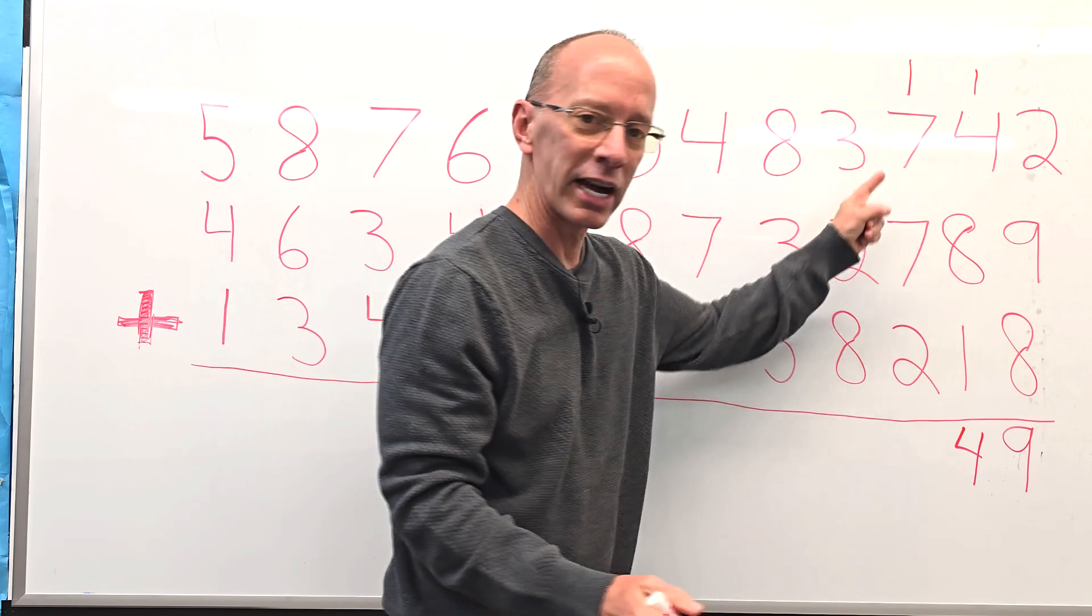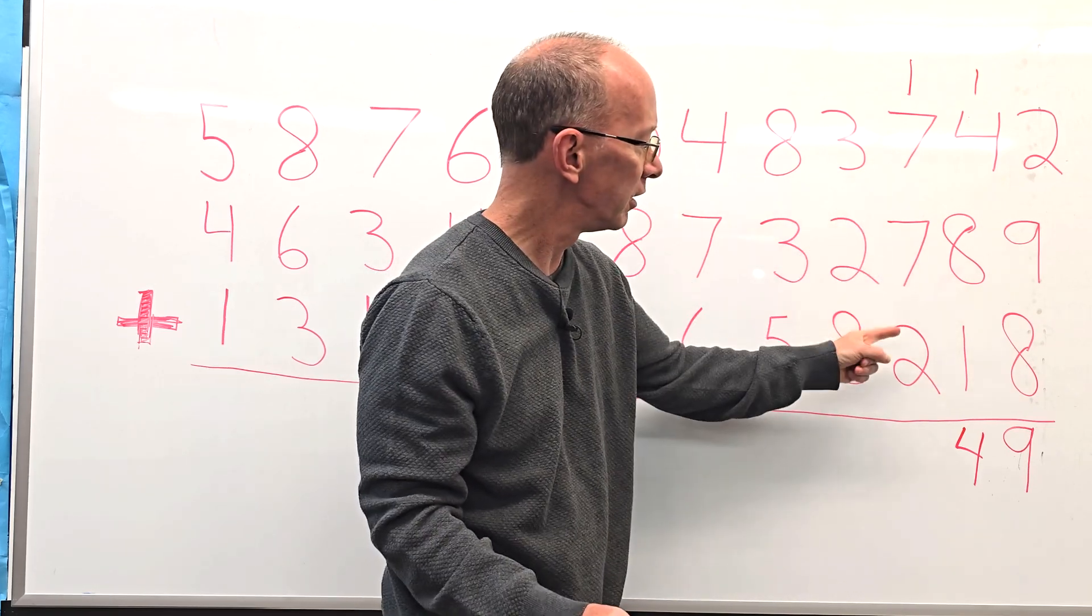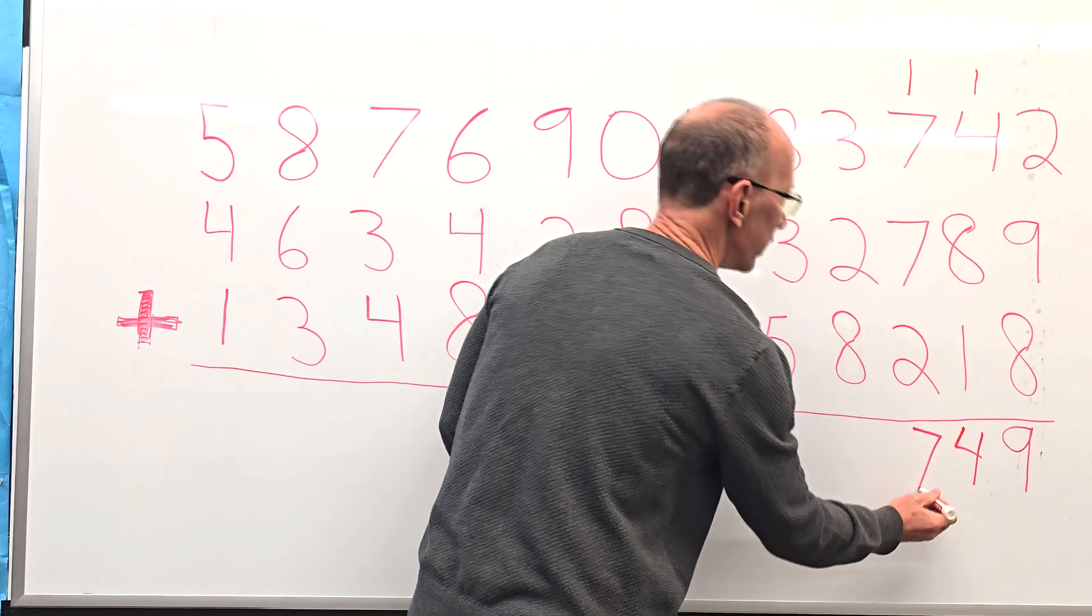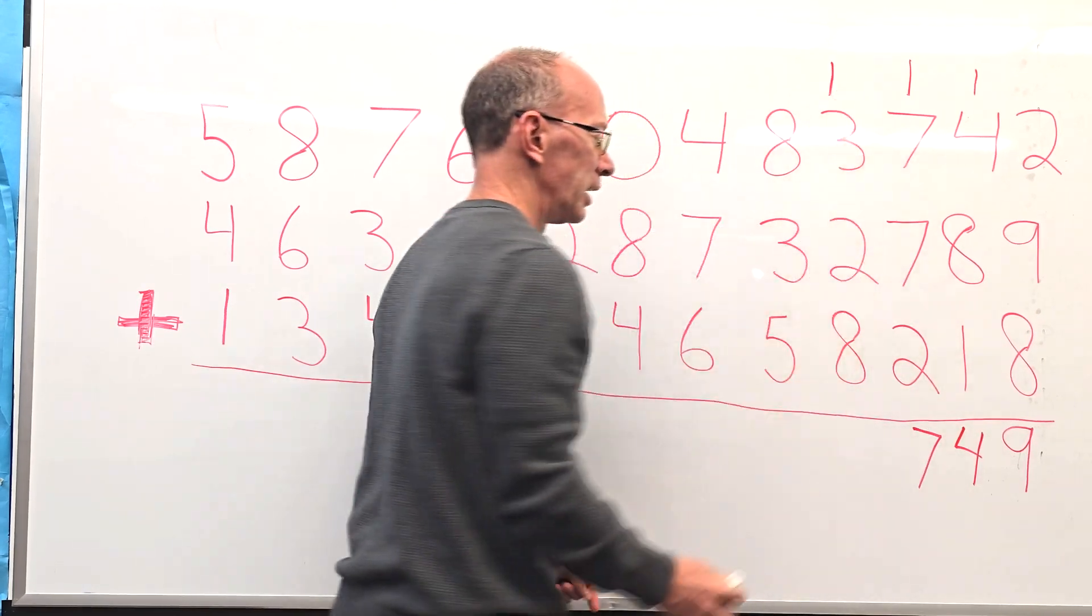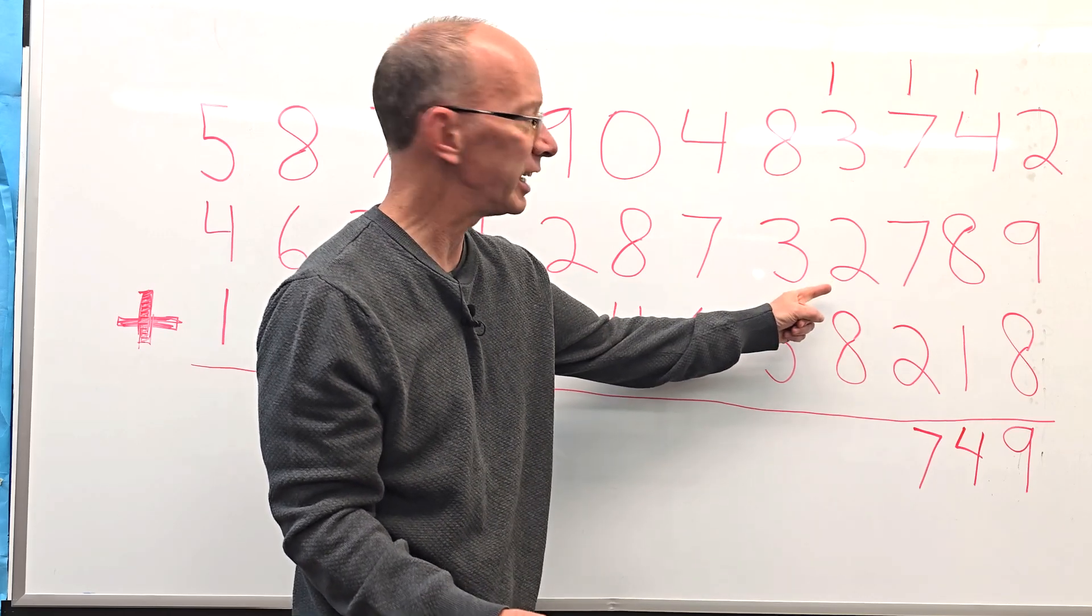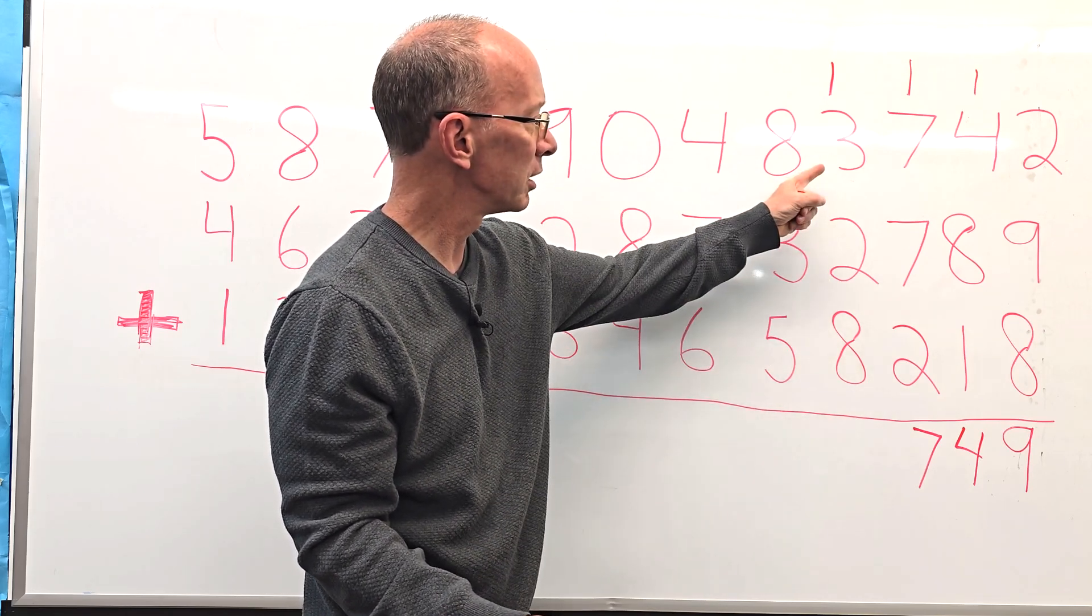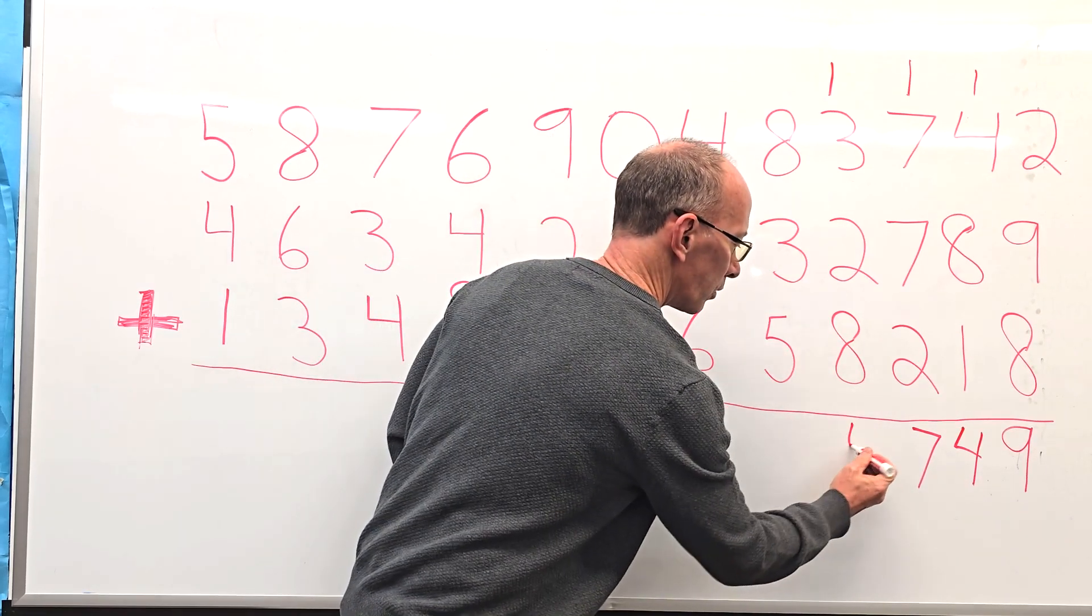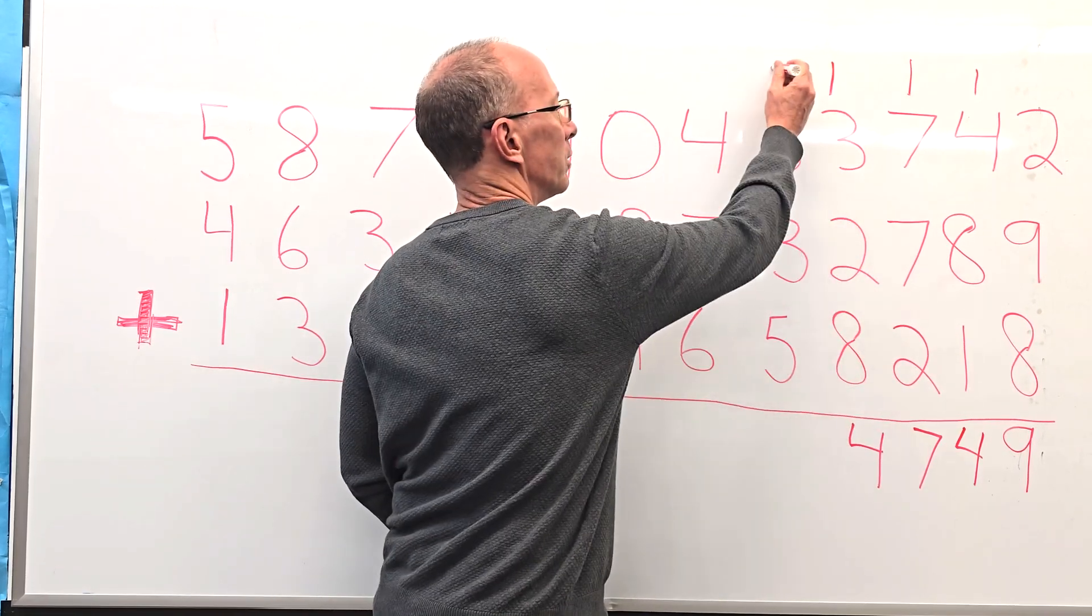And I notice I have a double fact. 7 and 7 is 14, 15, 16, 17. So I'll put the 7 right here, carry the 1 up here. And then 8 plus 2 is 10, and then plus the 3 and a 1, which would be 14. So I'm going to put the 4 right here, carry the 1 up there.